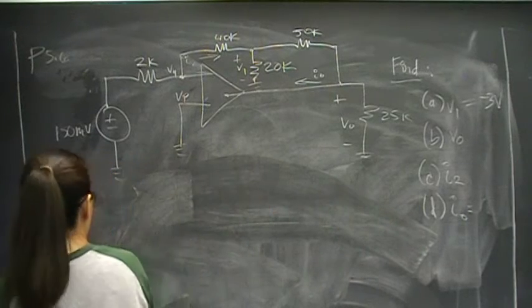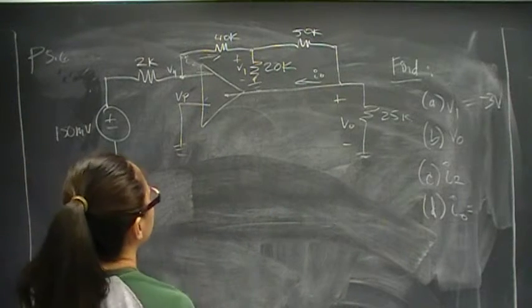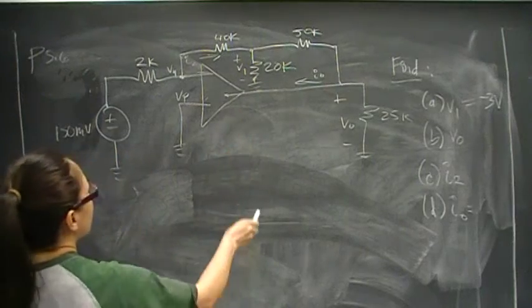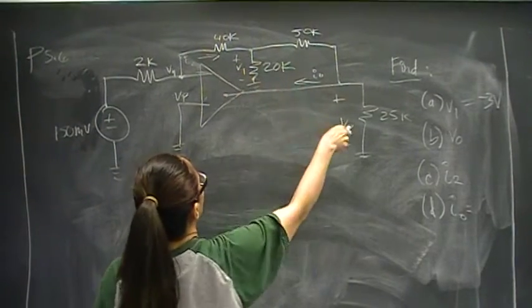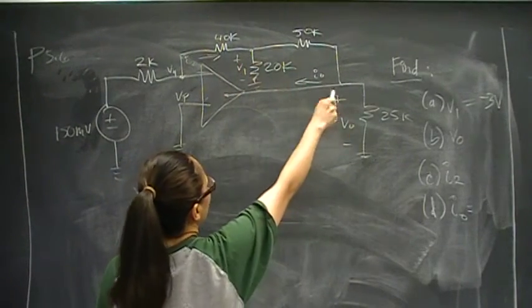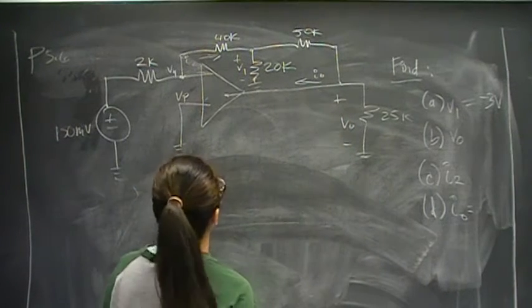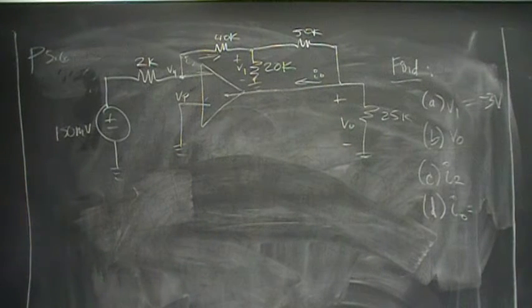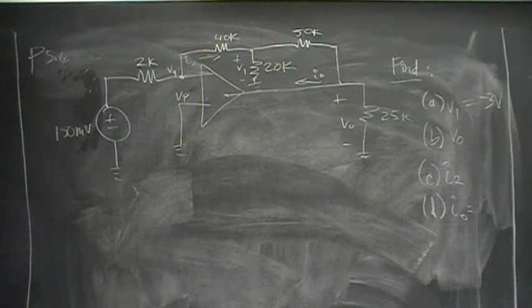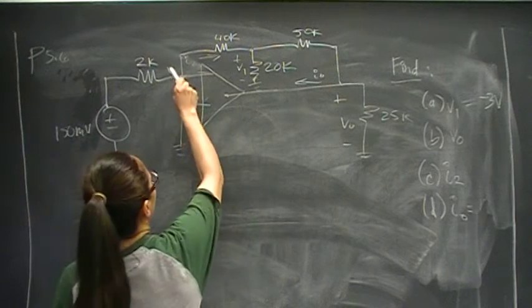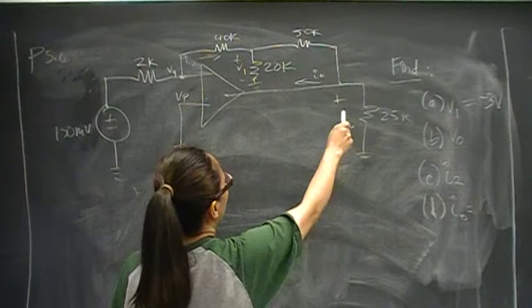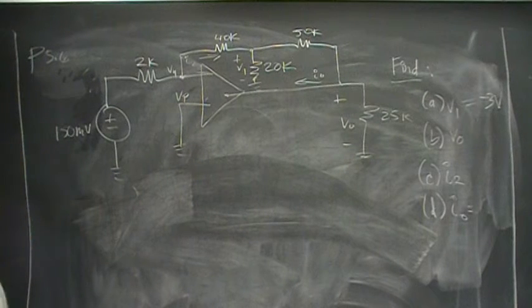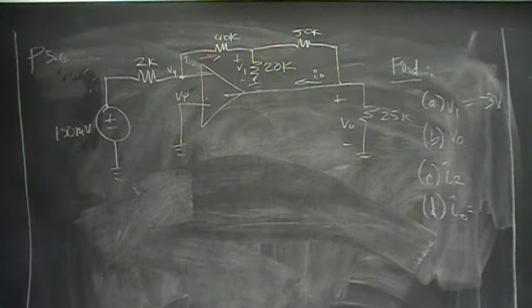So now let's do node voltage at V1, because if we do node voltage at V1, we're going to get some kind of relationship with Vout, and it might be enough information. It looks like it will be enough information. As you've seen, we have a number, number, number, number, and one variable, so it will be one variable and one unknown that will be able to solve for Vout.